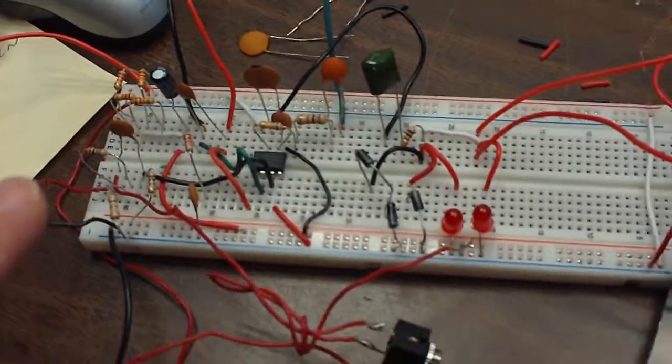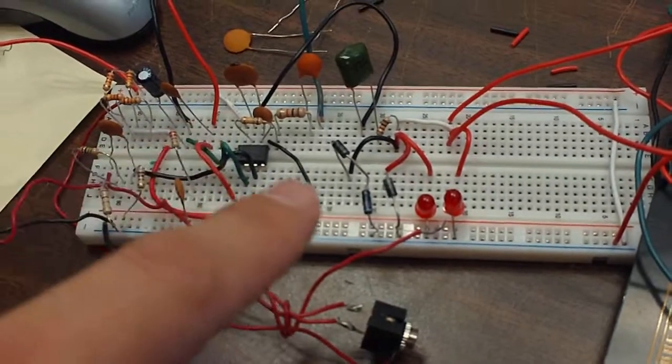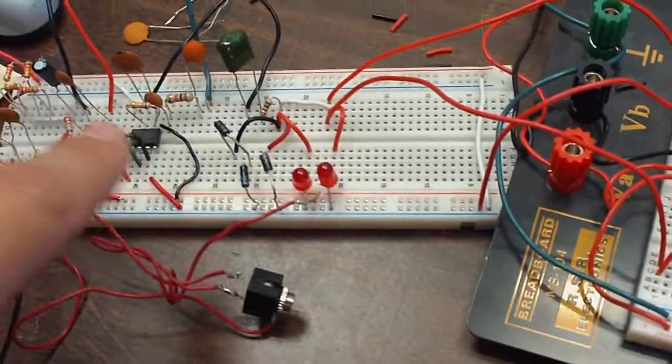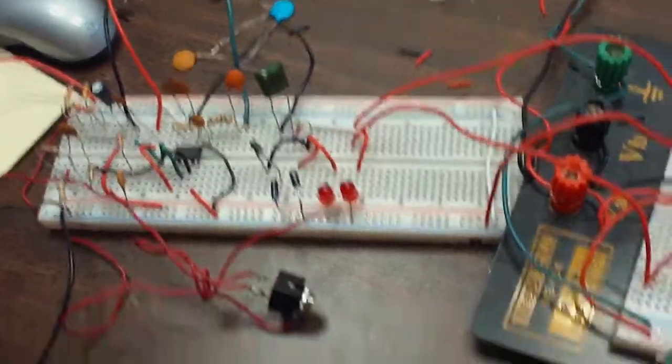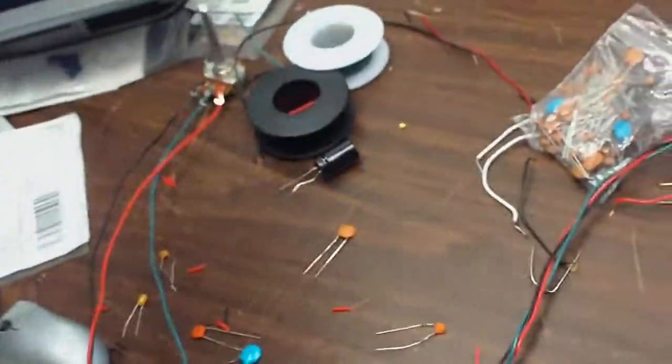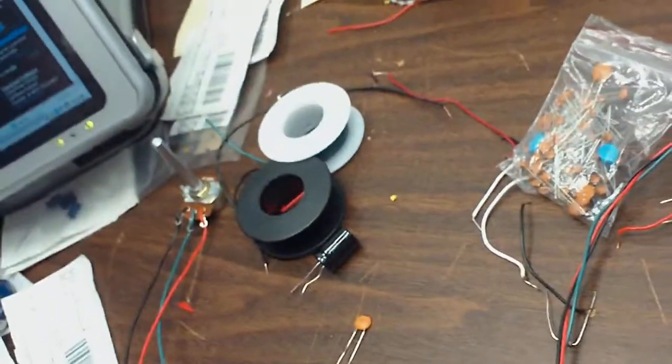That's the distortion circuit. Two op amps in one package. Of course, it's got some hard clipping going on with silicon diodes and some LEDs. Gain adjust, that's your feedback resistor.